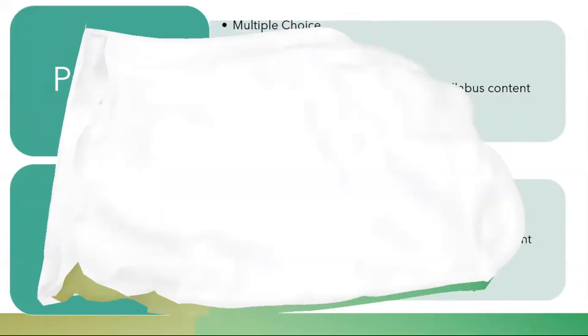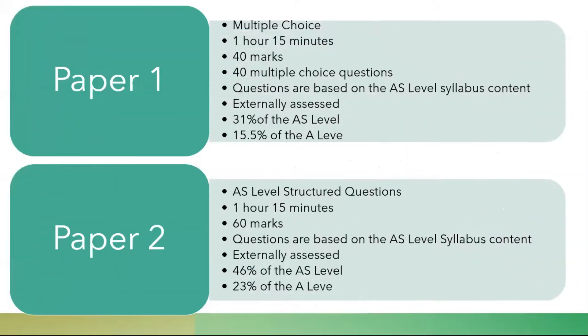Now let's look at the paper. Which ones you give? Paper 1 or Paper 2? Paper 1 is multiple choice questions. It is one hour 15 minutes. It is 40 marks. It is 40 MCQ questions. The questions are based on the AS level syllabus content.